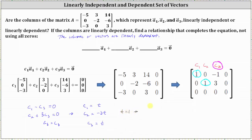So if t is equal to one, notice C sub one is equal to one, C sub two is equal to negative three, and C sub three is also equal to one. But remember for this equation, we can let t be any value, and the equation will be equal to the zero vector.